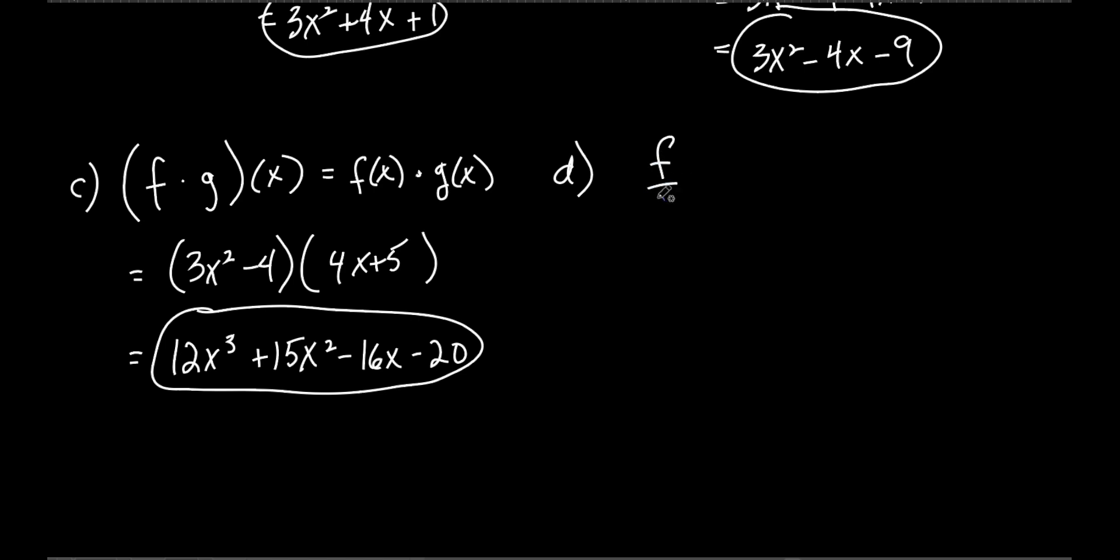So it's going to be f over g of x. What's that equal to? That's equal to f of x divided by g of x. They're just trying to get you used to this notation. That's all this is about. Just getting you used to it, getting you comfortable with it. And so there we go. So f of x. What's our f of x again? 3x² minus 4 over g of x, which is 4x plus 5. Really, there's nothing we can do to this.